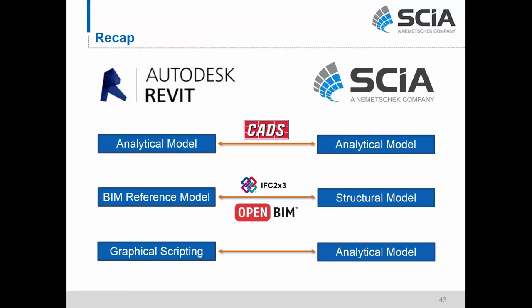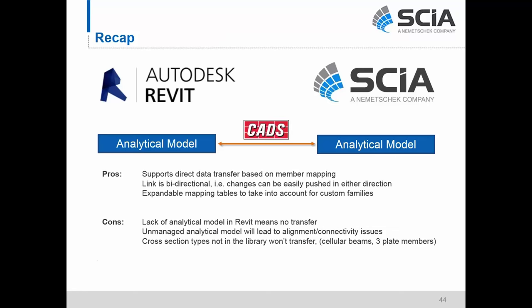Let's take a brief moment to recap the three main interoperability workflows. The first is the analytical model exchange — a direct data transfer based on member mapping. The link is bidirectional, so changes can be easily pushed in either direction between C and Revit. Also, the link is expandable: we can expand mapping tables to take into account custom families or other user mapping. Those are some of the pros.